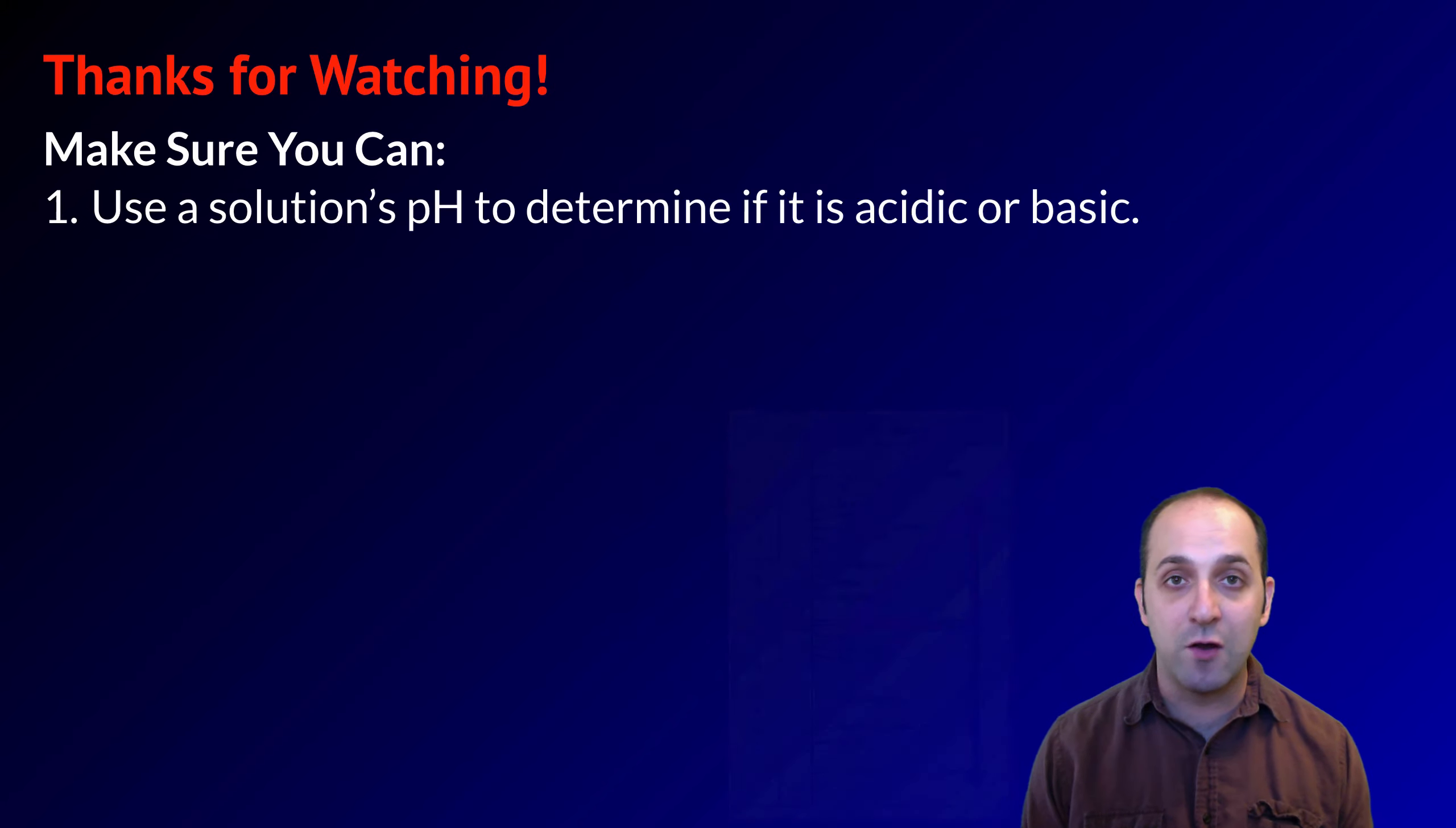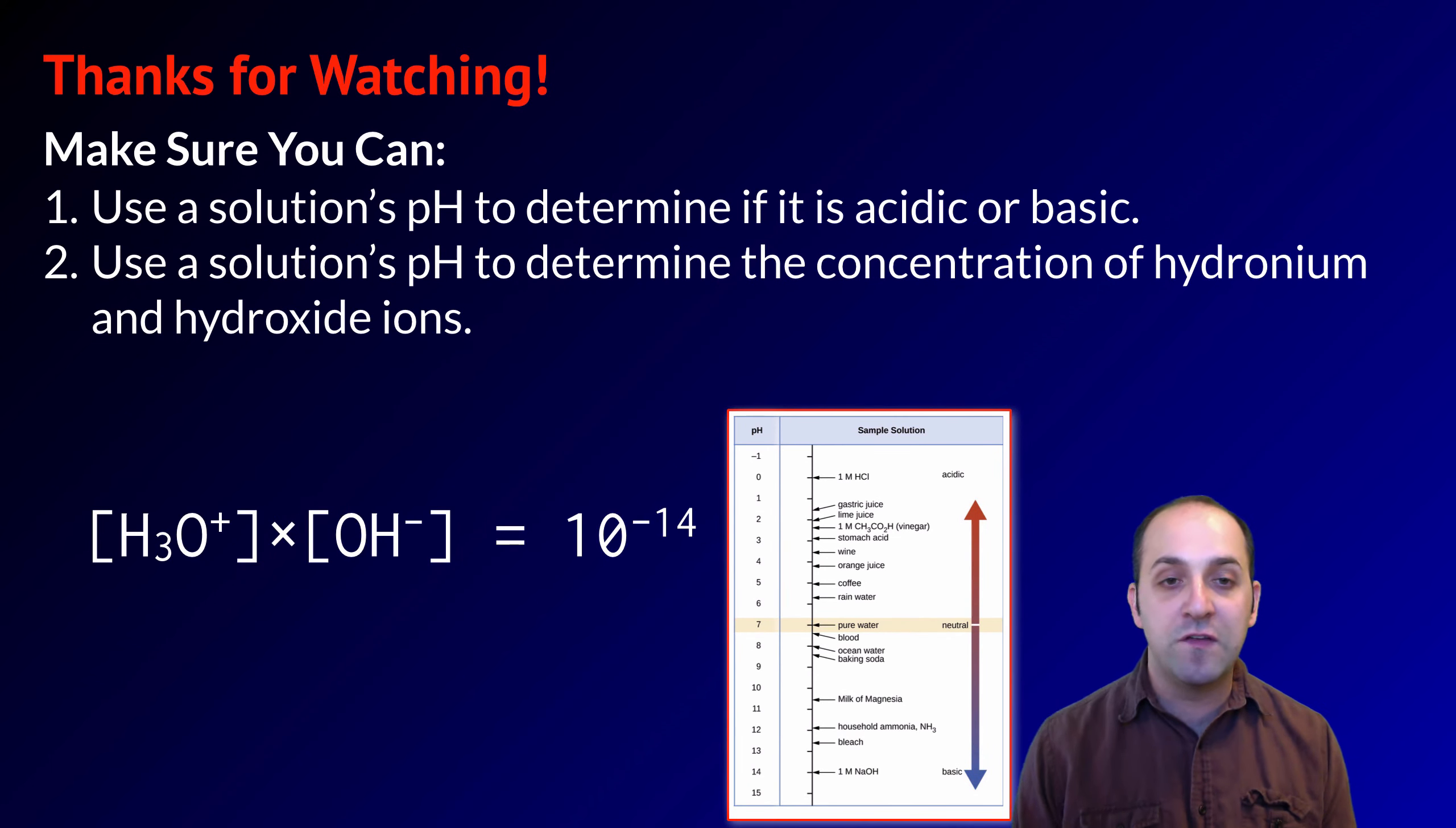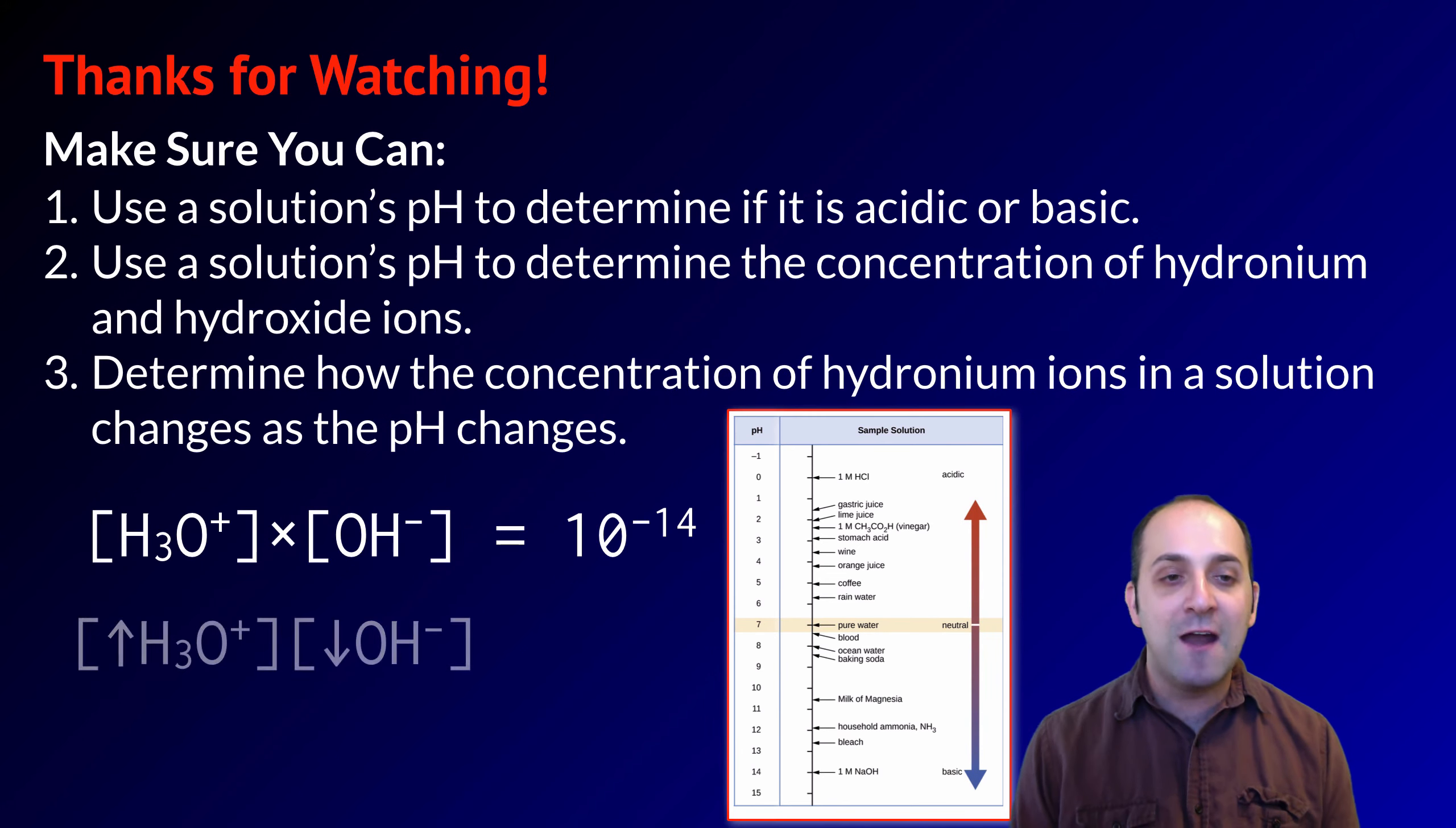Make sure that you can do the following things here at the end. Make sure that you can use a solution's pH to determine if it's an acidic solution or a basic solution, or for that matter, a neutral solution. Also, make sure that you can use the solution's pH to determine the concentration of hydronium and hydroxide ions in that solution. Finally, make sure that you can determine how the concentration of hydronium ions in the solution changes as the pH changes.